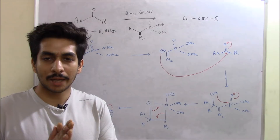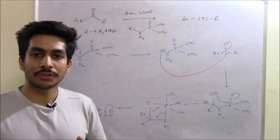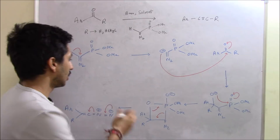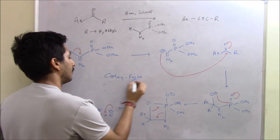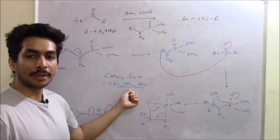Generally in CSIR NET exam there have been many questions where an aldehyde is converted to an alkyne. One of the most notable reactions is Corey-Fuchs reaction — C-O-R-E-Y F-U-C-H-S. Here we use CBr₄, PPh₃, and a strong base. If you use these reagents, your aldehyde or ketone is also converted to an alkyne. I have already made a video on this reaction, you can check it out.